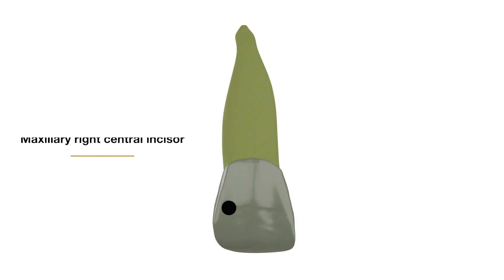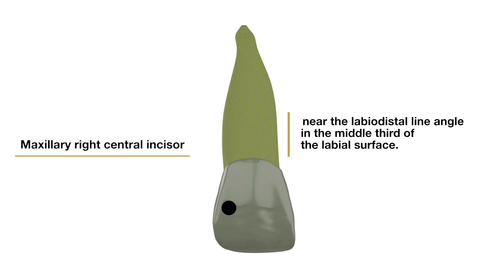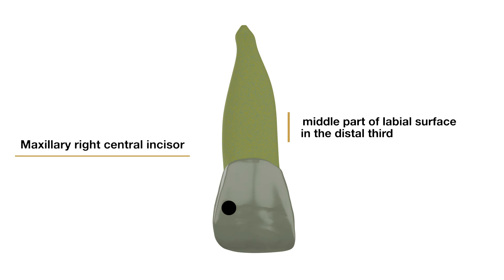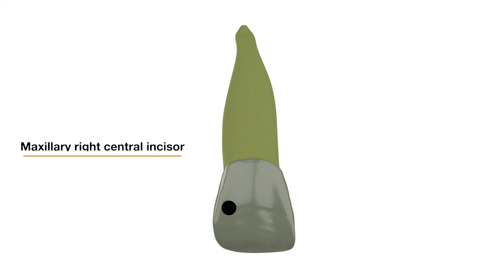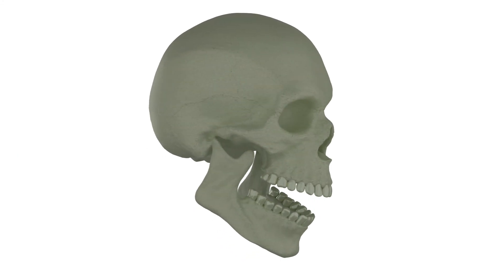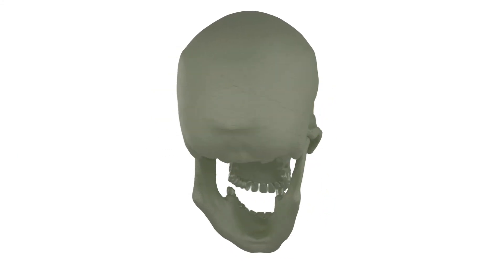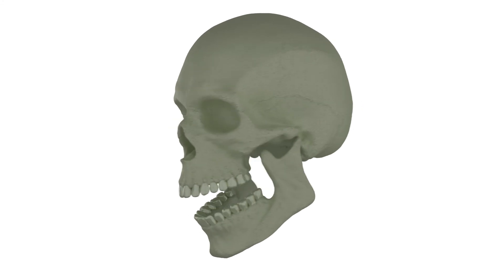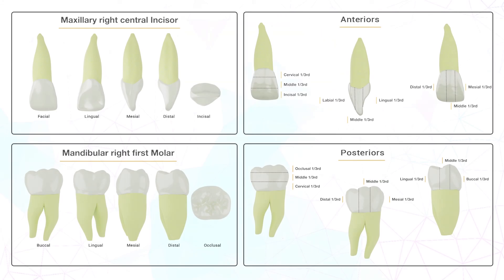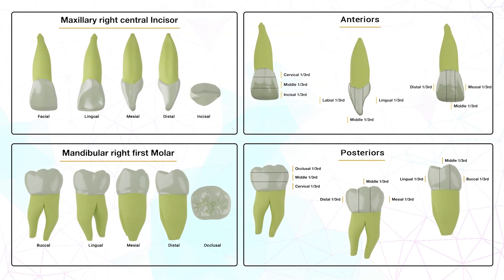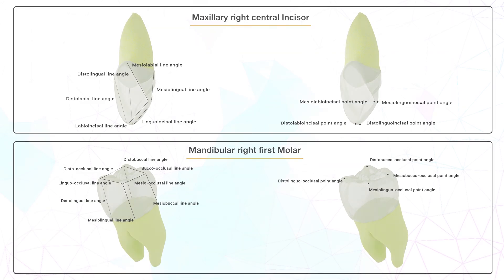Now let's get back to the question. The pointed area is near the labiodistal line angle in the middle third of the labial surface, or is on the middle part of the labial surface in the distal one-third of the maxillary right central incisor. That completes our basic terminologies which will help us get started with the anatomy of individual teeth. To summarize it all, you can see a picture on the screen, and to download it, check the description.